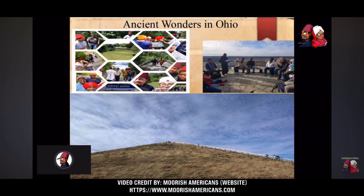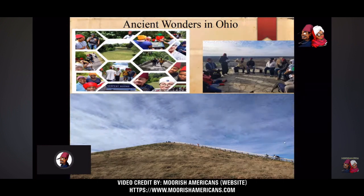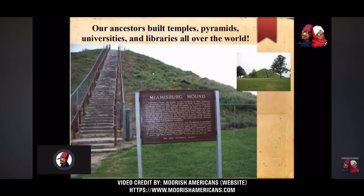All throughout the Americas. This is just some images from Ohio. There's a pyramid in Miamisburg — you wouldn't even know it's there because it's in the middle of a neighborhood surrounded by a golf course. They have a little park there to preserve it. Doing research specifically on this Miamisburg mound, I found out that when the Europeans found it, it was covered in stone slabs.